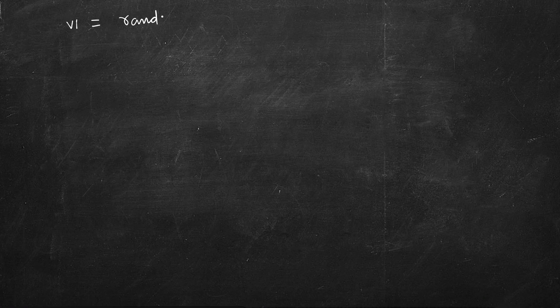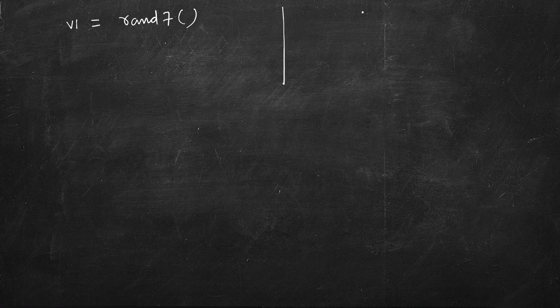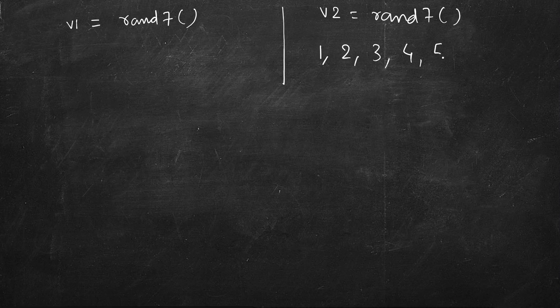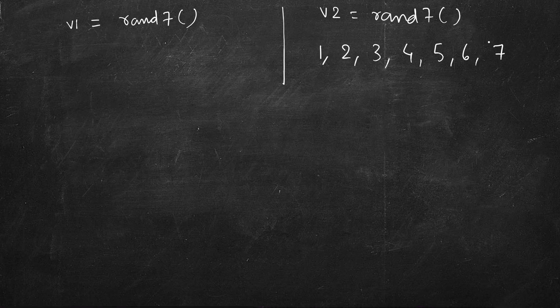Let's roll the dice — call rand7 — and store the result in v1. We can get any value from 1 to 7. But if the value is more than 5, we continue rolling. For another variable v2, we also call rand7 and may need to call it multiple times. We get a value from 1 to 7 and need to map these 7 values to 10 values. We can divide it into two parts: map the first half to the first five numbers, and the second half to the second five numbers.